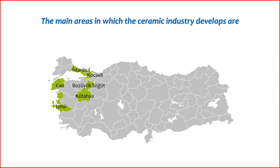The ceramic industry in Turkey has seen significant development and growth, with several regions playing a key role in its expansion. 1. Kütahya — renowned as a major center for the ceramic and tile industry in Turkey. The city has a long history of ceramic production and is home to numerous ceramic factories producing a wide range of ceramic products, including tiles, tableware, and sanitary ware.